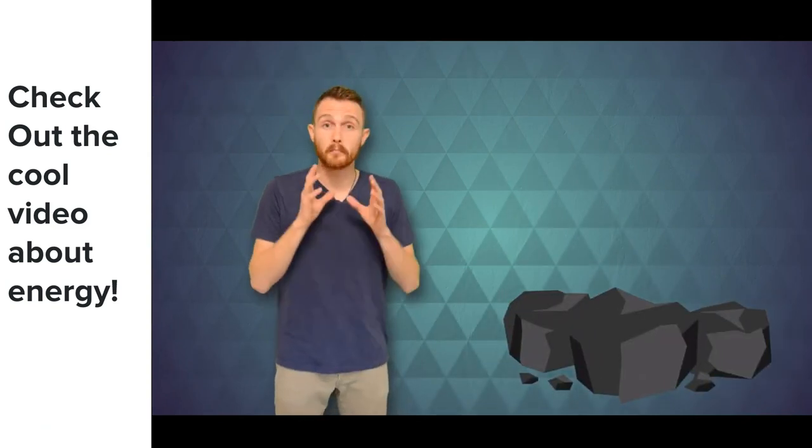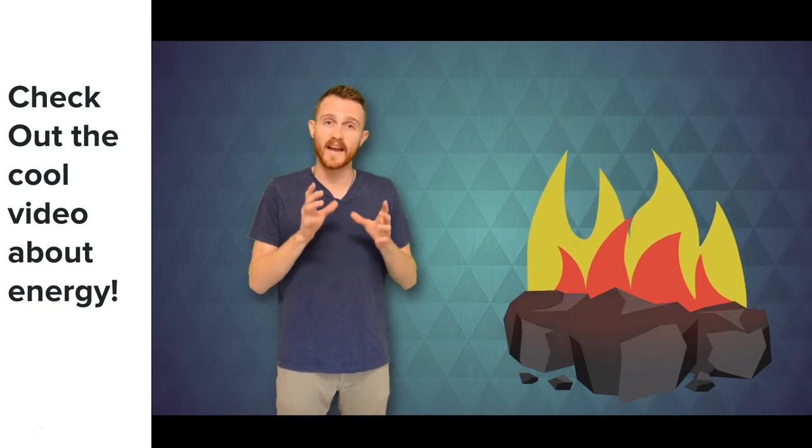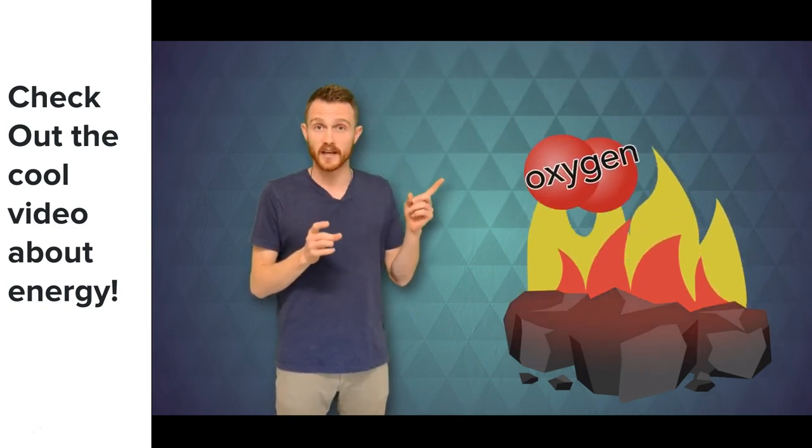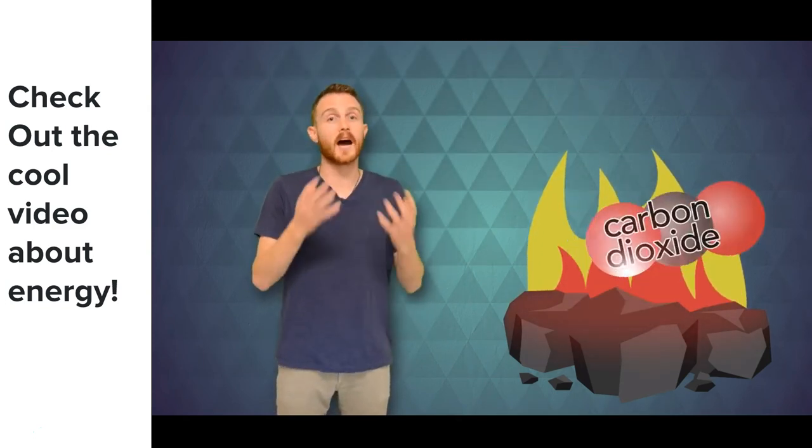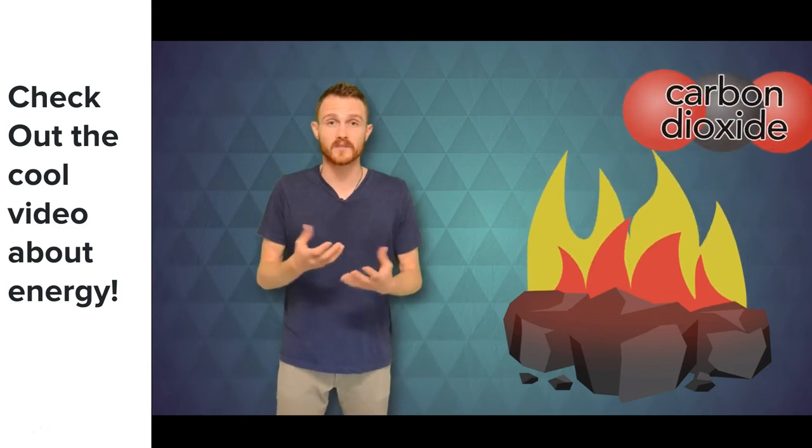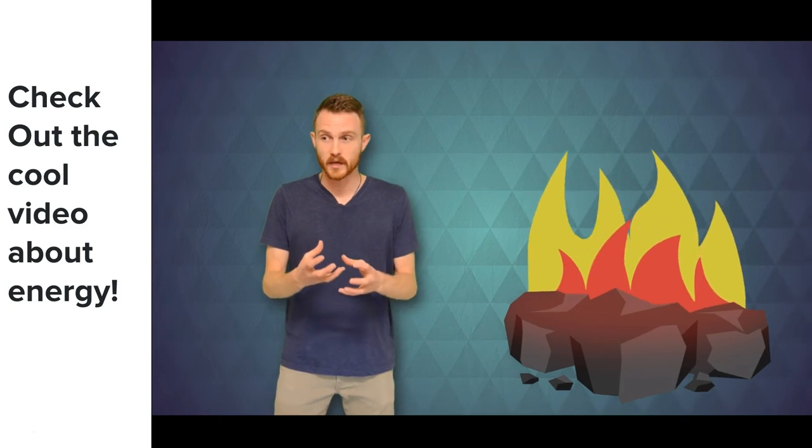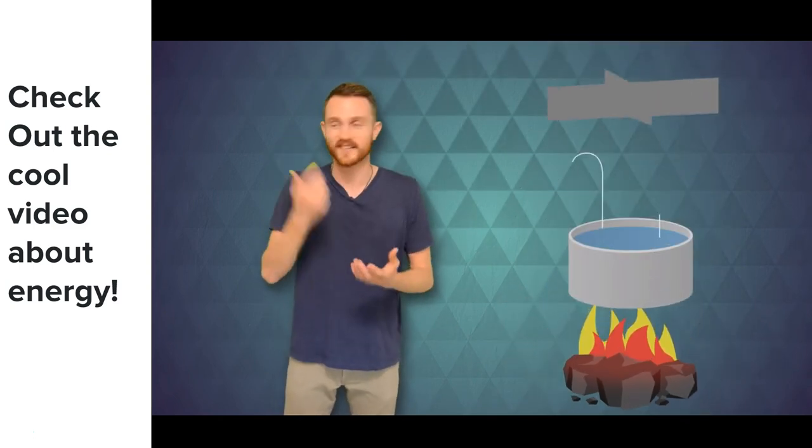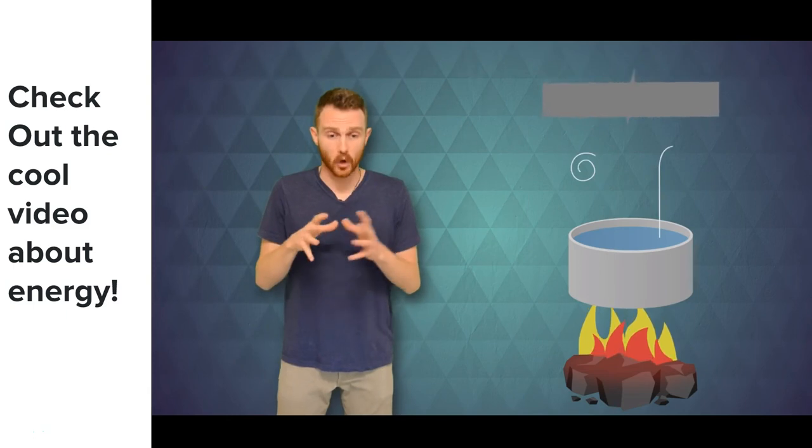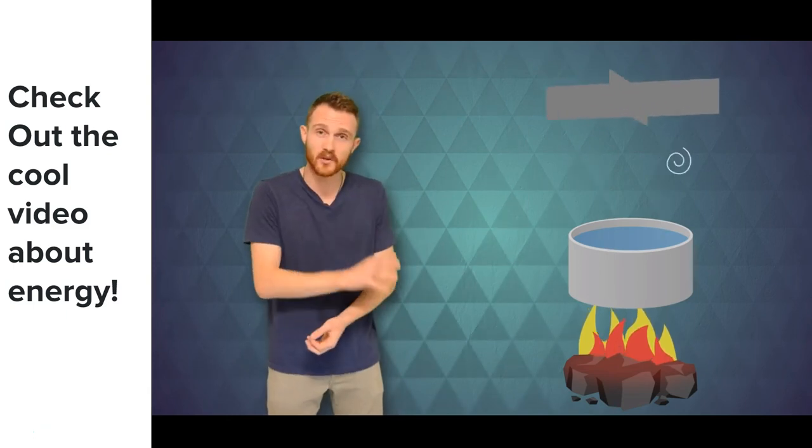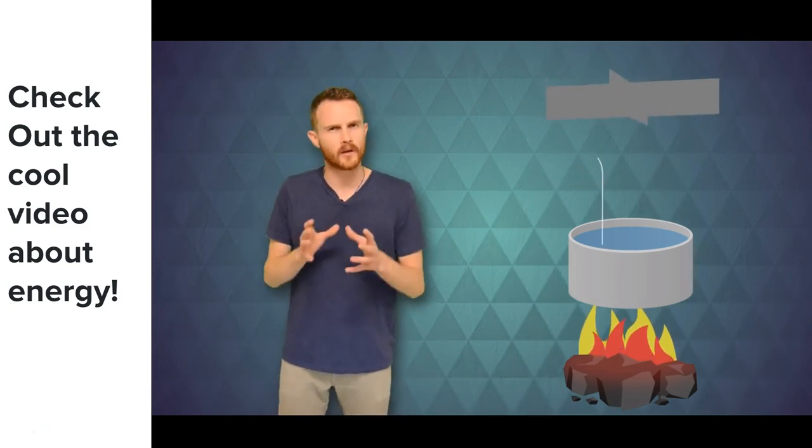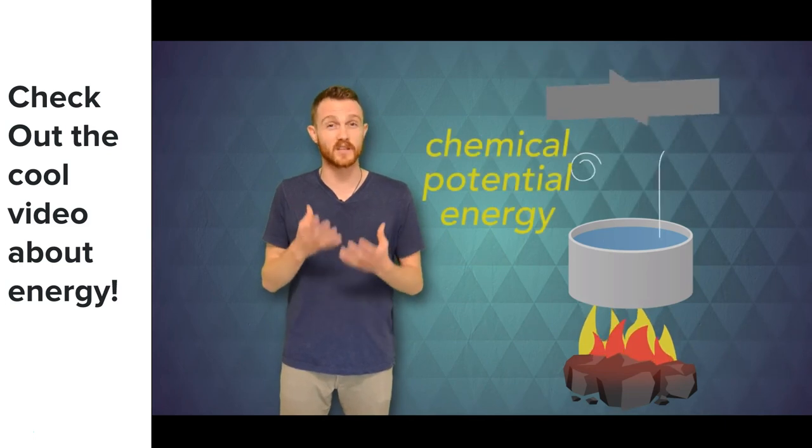But what if that energy came from coal? Well when you burn coal there's a chemical reaction between oxygen in the air and the coal that creates carbon dioxide and other chemicals. The creation of these chemicals releases energy as heat which we use to boil some water which spins a turbine like the wind turbine. Because all this energy is coming from a chemical reaction we say that the coal has chemical potential energy.